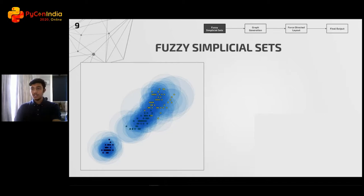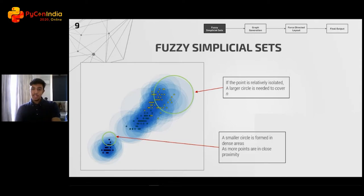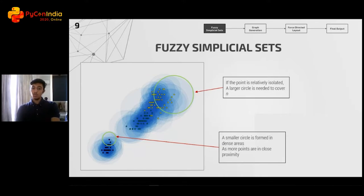This is a visual representation of the fuzzy sets. As you can see, each set is formed as a circle to cover n nearest neighbors — in this case, let's consider them to be five. The yellow point on the right-hand side has a much larger set, as it needs a larger radius to reach five neighbors. Whereas the purple point has a much smaller circle, as there are more points in proximity due to the density. Note that although the yellow circle seems to have more than five points, the data is four-dimensional and we are only looking at a two-dimensional projection — so the set only contains five points.